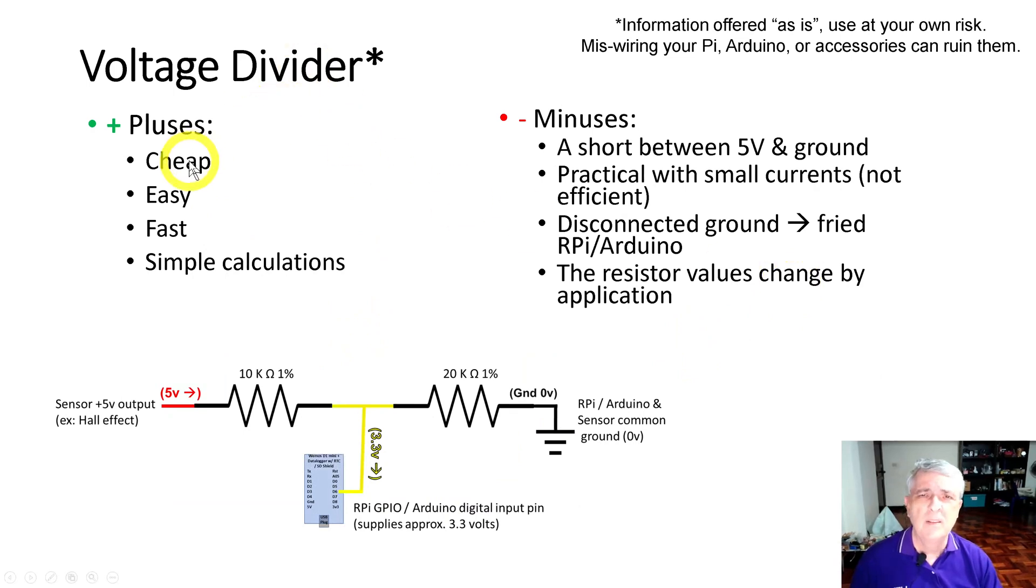Voltage dividers - the pluses: it's cheap, I mean resistors are almost free, it's easy, you just wire together two of these things in this little T configuration. It's fast, so you can literally just twist the leads together. I prefer to solder them. And the calculations are relatively simple - there's the two variables of the resistors and then the voltage, and you get your answer.